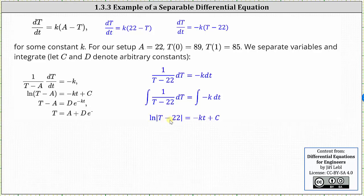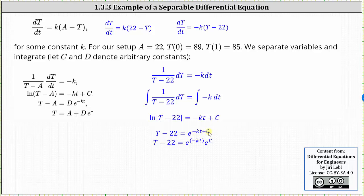Now we need to solve the equation for big T. We can write the log equation as an exponential equation, or exponentiate both sides with base e. Either way, the natural log of the absolute value of big T minus 22 equals negative Kt plus C is equivalent to big T minus 22 equals e raised to the power of negative Kt plus C. Notice the absolute value is dropped because the exponential on the right is always positive. Because the exponent is a sum, we can write this as e to the negative Kt times e to the C, where e to the C is just some constant — let's call it D. Therefore, big T equals 22 plus D times e to the power of negative Kt.